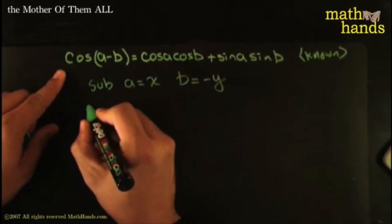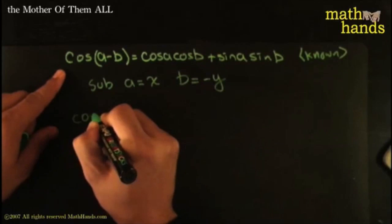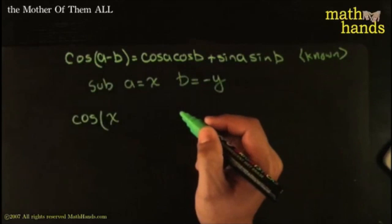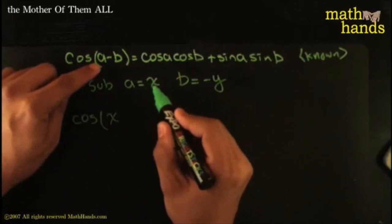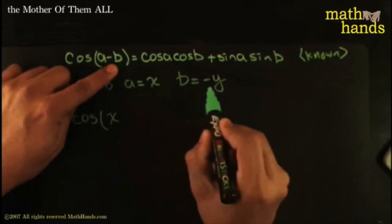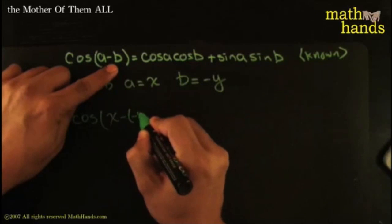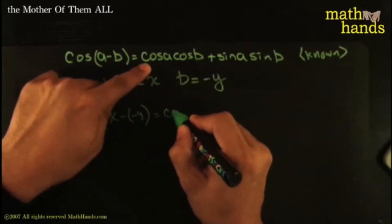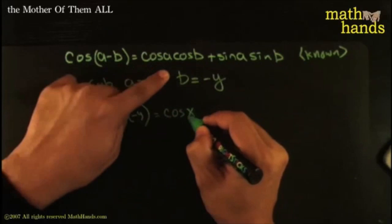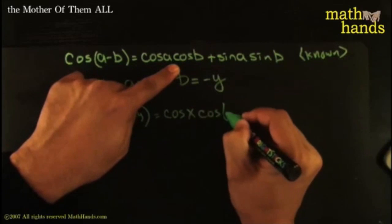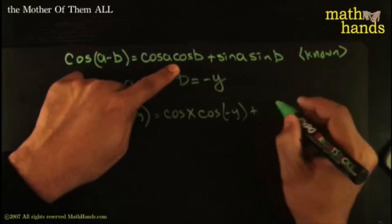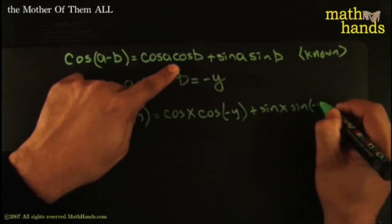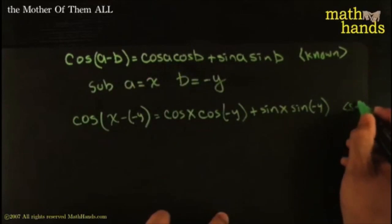Then you'll have cosine — instead of A, you'll have X; instead of B, you'll have negative Y. That's equal to cosine X times cosine of negative Y, plus sine X times sine of negative Y. This is just the substitution — the tweaking.